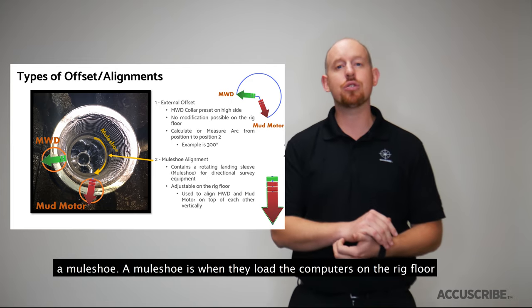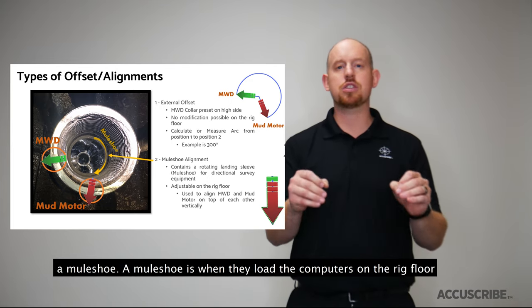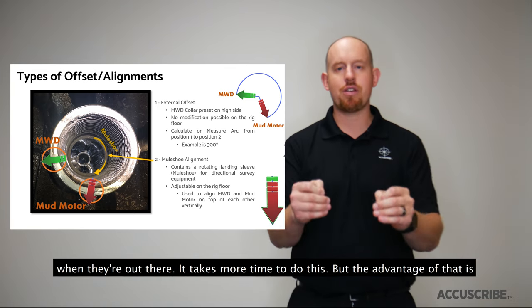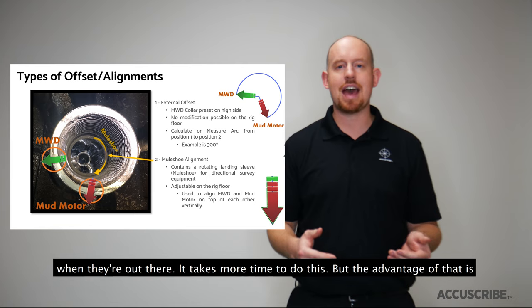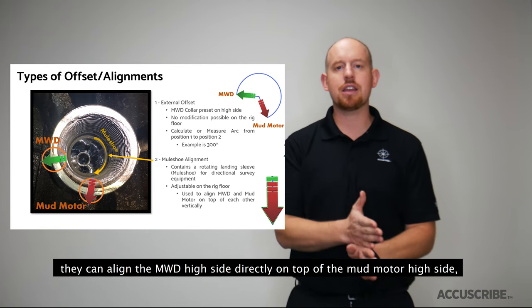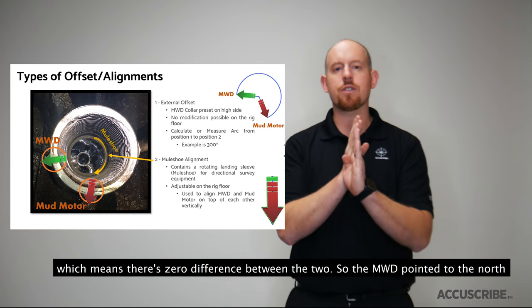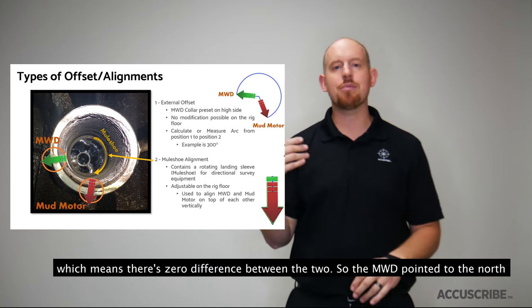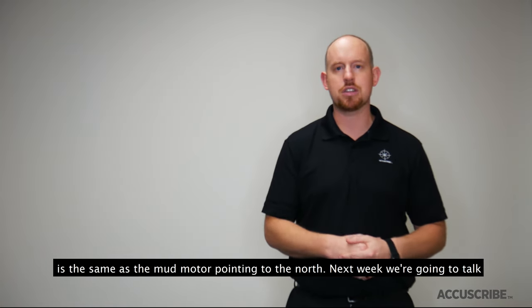Now the other thing is called a mule shoe. A mule shoe is when they load the computers on the rig floor when they're out there. It takes more time to do this but the advantage of that is they can align the MWD high side directly on top of the mud motor high side which means there's zero difference between the two. So the MWD pointed to the north is the same as the mud motor pointed to the north.